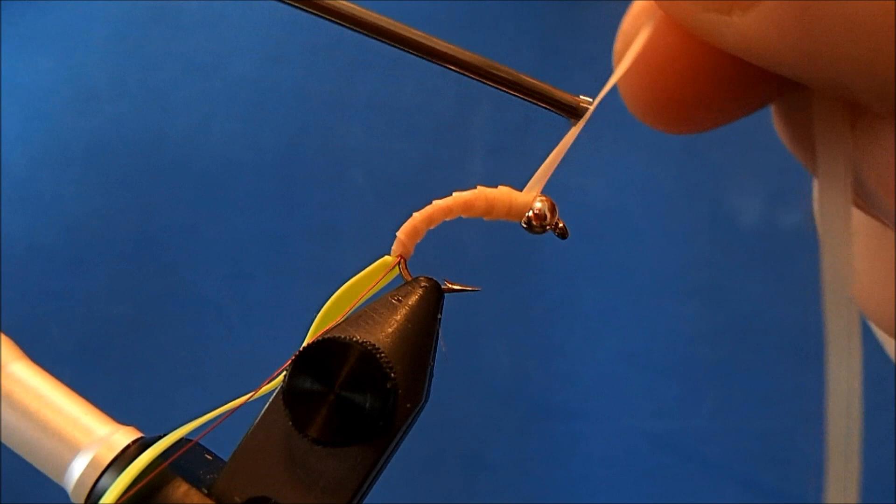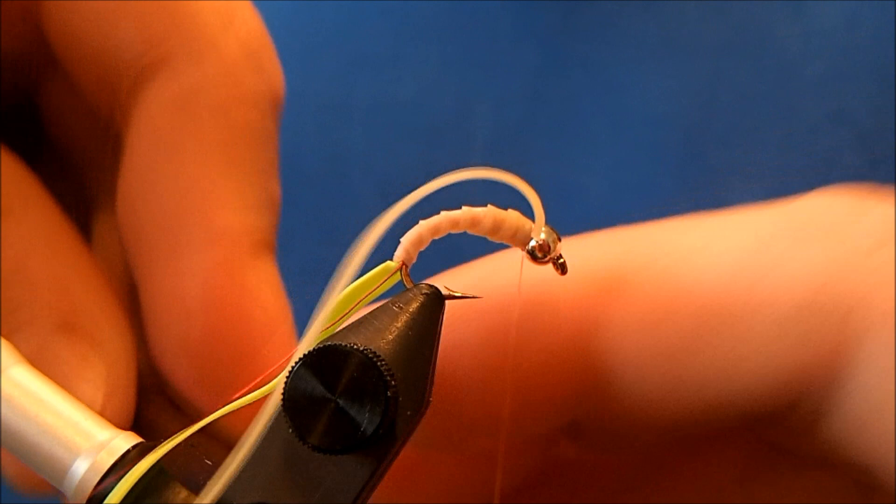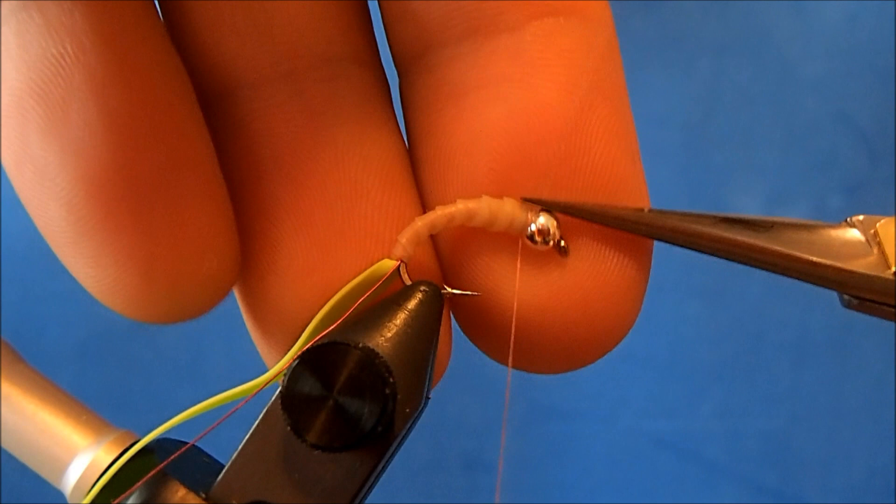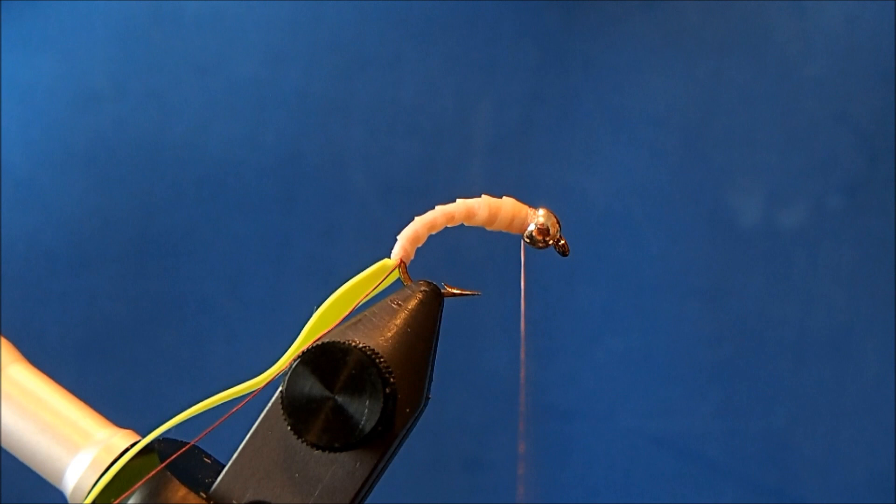So I'll work my way up until I get behind the bead and then I can pull it real tight and a couple of wraps in front and behind. And then I'll pull it again pretty taut so I can remove it and that material will slink back through.